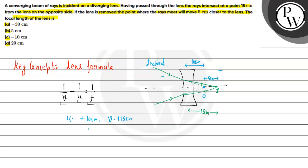Applying the lens formula: one over 15 minus one over 10 equals one over f. Taking the LCM of 30: two over 30 minus three over 30 gives minus one over 30. So one over f equals minus one over 30, and the focal length f is minus 30 cm. I hope you all understood this concept. All the best and thank you.